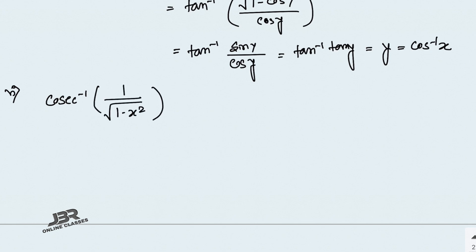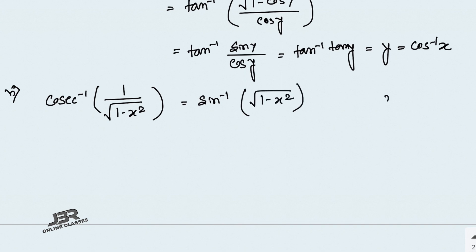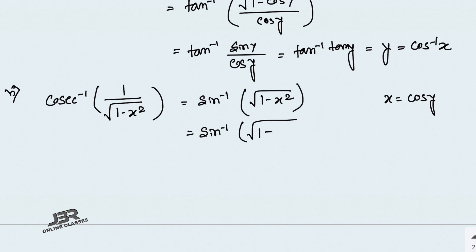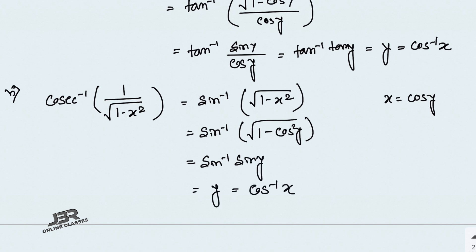Sum number 6: cosec inverse of 1 over root(1 minus x²). This equals sin inverse of root(1 minus x²). Let x equal cos y, then sin inverse of root(1 minus cos²y) equals sin inverse of sin y, which gives y. And y equals cos inverse x. That is your answer.